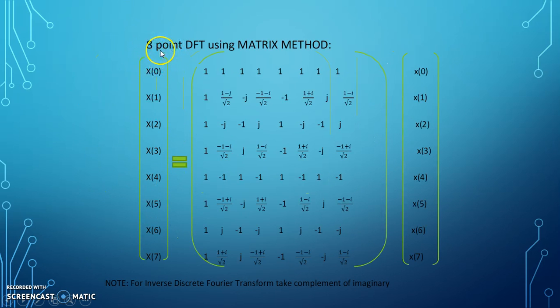Same is the case with the 8-point DFT using the matrix method. And you have to note one thing: for inverse discrete Fourier transform, take the complement of the imaginary.